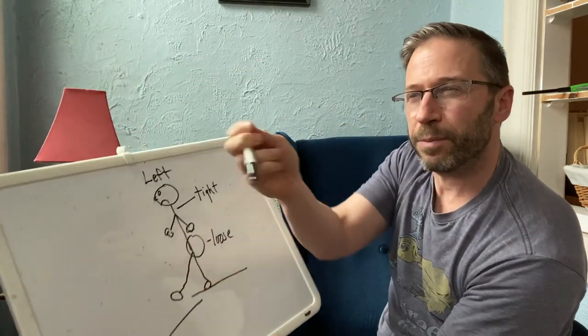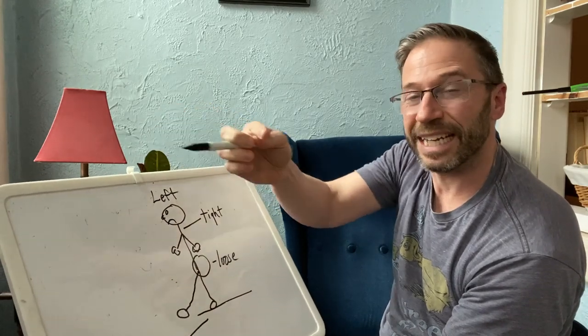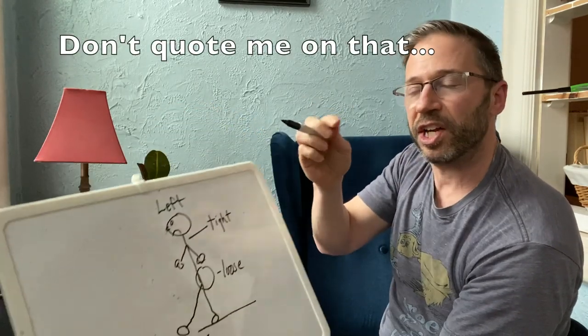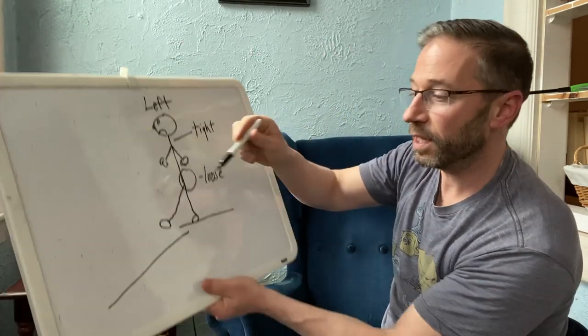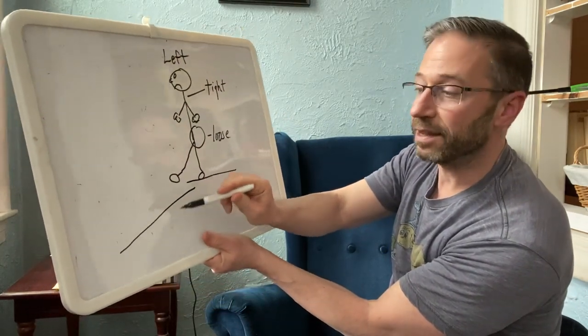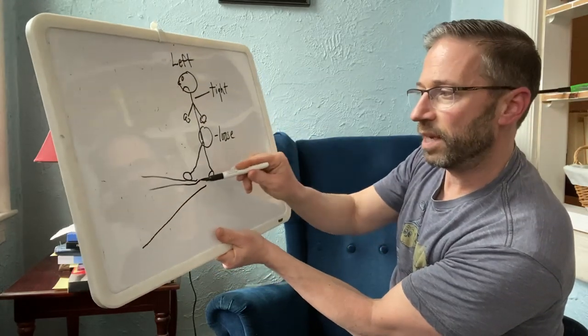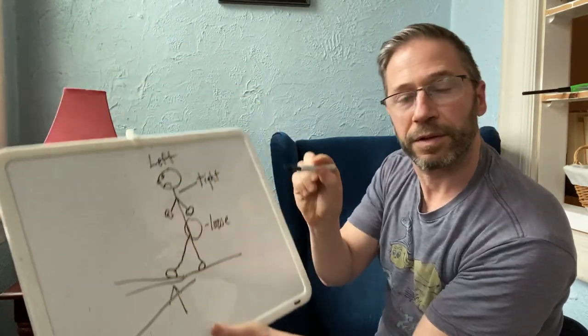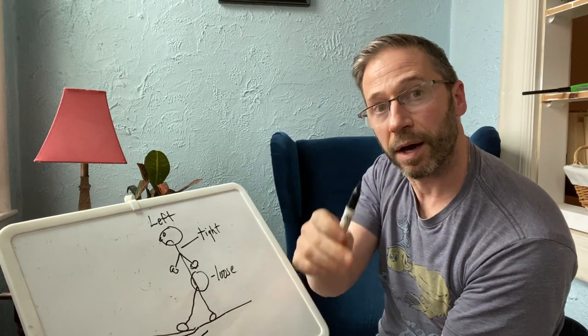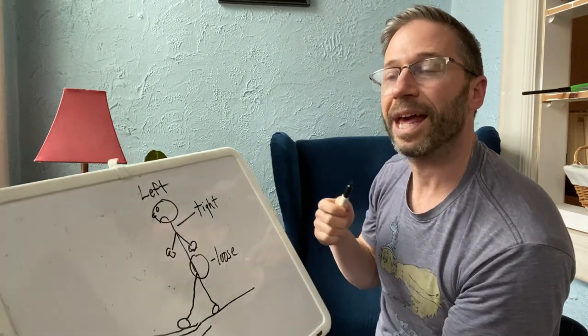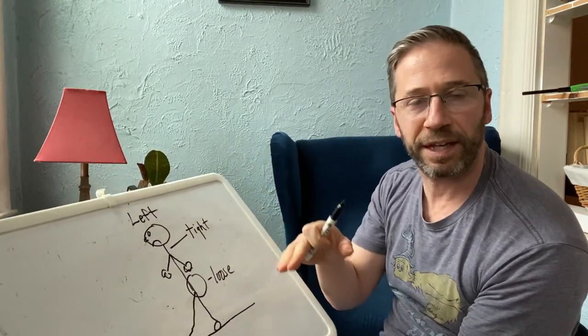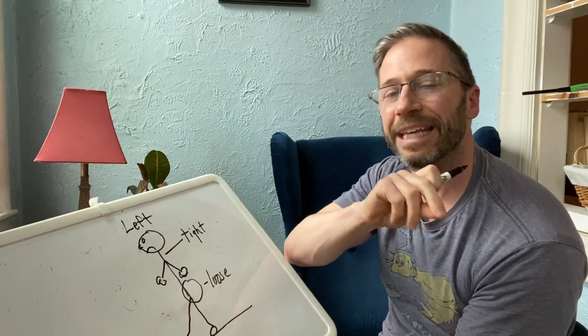The prisms changed my brain's, I guess it changes how the light enters your eye and it changed my brain's perception of the ground. So instead of the ground being like this, the ground was like this, it came up, but the prisms made the ground come up perceptually. And when that happened, all the tension in my back went away immediately.